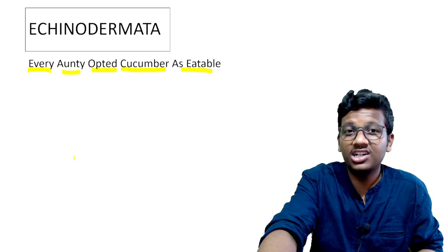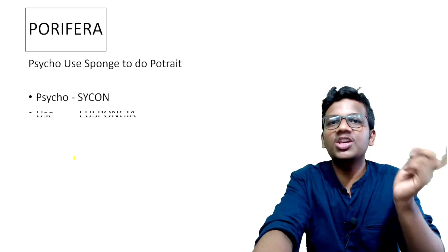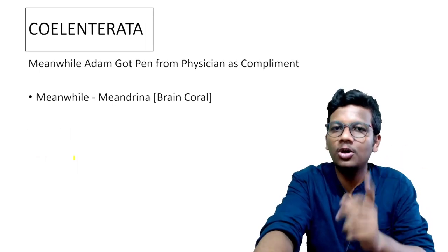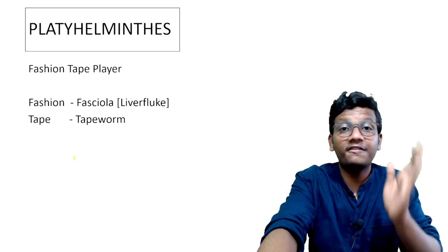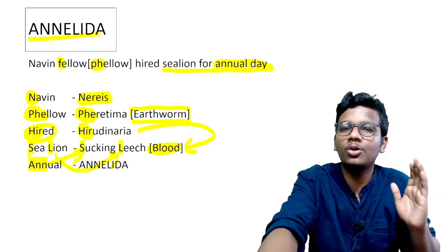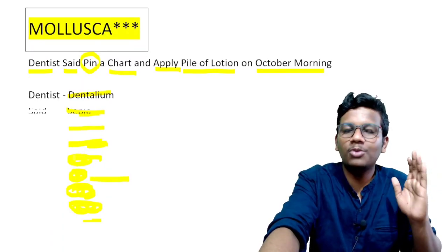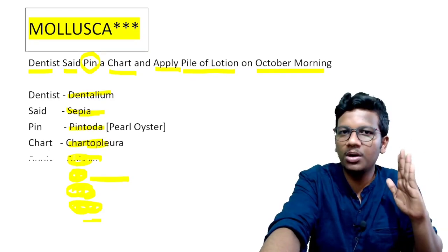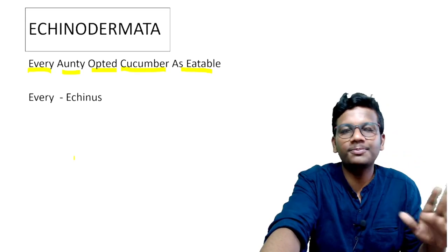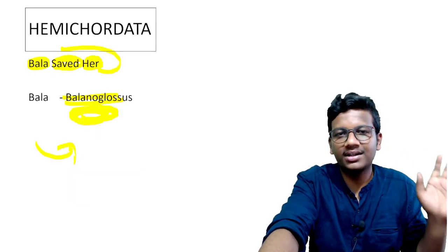Let's brush up everything in a nutshell. Porifera: psycho use sponge to do portrait. Coelenterata: meanwhile Adam got pen from physician as compliment. Ctenophora: plain T. Platyhelminthes: fashion tape player. Aschelminthes: Angie asked which is Asia. Annelida: Navin fellow hired sea lion for annual day. Arthropoda: two categories — Gregarious Pest and Living Fossil. Mollusca: dentist said pin a chart and apply pile of lotion on October morning. Echinodermata: every anti-opted cucumber as eatable. Hemichordata: Bala saved her.